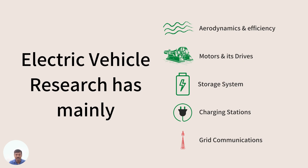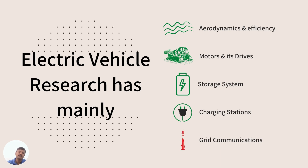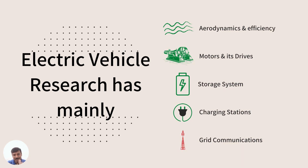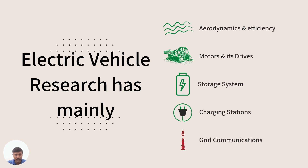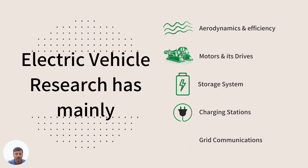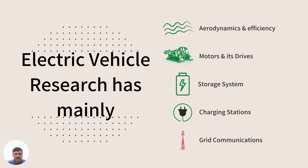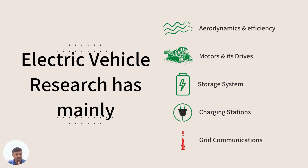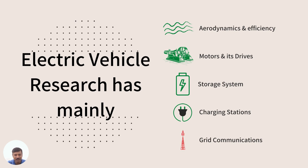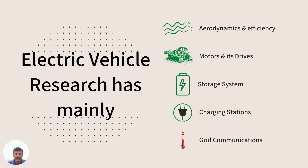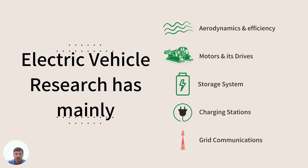As we know, in the block diagram of EV architecture we studied various subsystems in electric vehicles. Let us see them one by one. The five main research areas on screen are: aerodynamics and efficiency, motors and their drives, storage system, charging stations, and grid communication with electric vehicles. These are the five systems related to electric vehicles where you can do your own research.